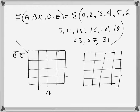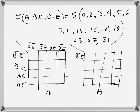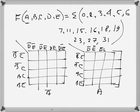A is the most significant variable. The first K-map is for ā and the second for a. The columns are labeled b̄c̄, b̄c, bc, bc̄, and the rows are labeled d̄ē, d̄e, de, dē. Both K-maps share the same row and column labeling.